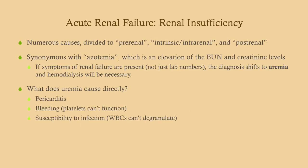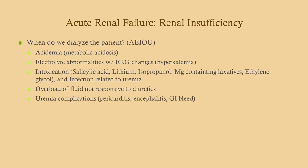Renal insufficiency has a number of causes divided into three categories: pre-renal, intrinsic or intra-renal, and post-renal. Intrinsic is further divided into glomerular nephrosis and tubulo-interstitial diseases. It is synonymous with azotemia — an elevated BUN and creatinine. However, if symptoms develop due to elevated nitrogenous waste products, the diagnosis shifts to uremia. Symptoms include pericarditis and platelet-type bleeding, because nitrogenous products interfere with platelet degranulation, as well as susceptibility to infection because white blood cells cannot degranulate.